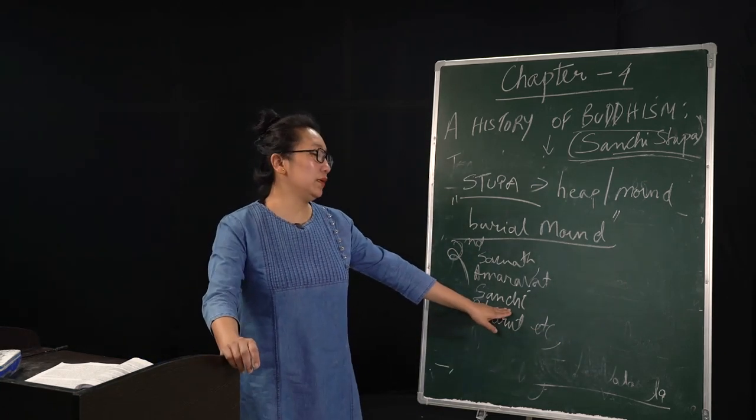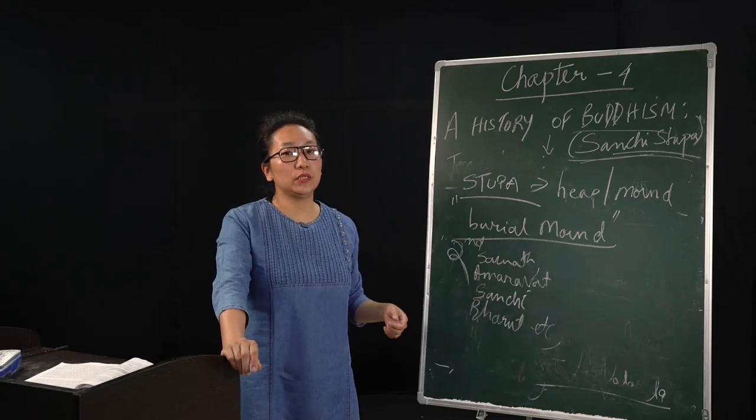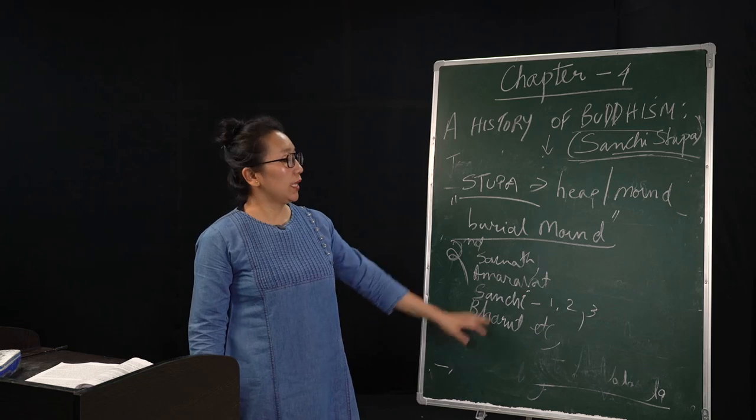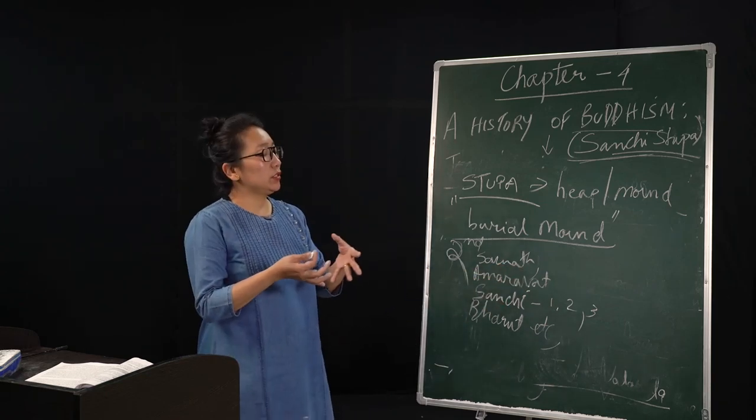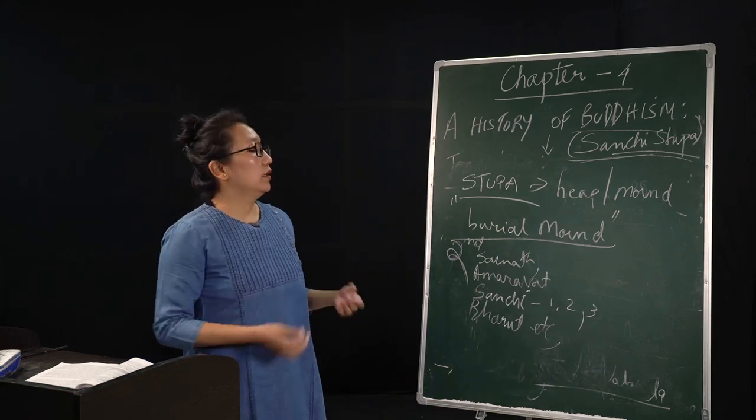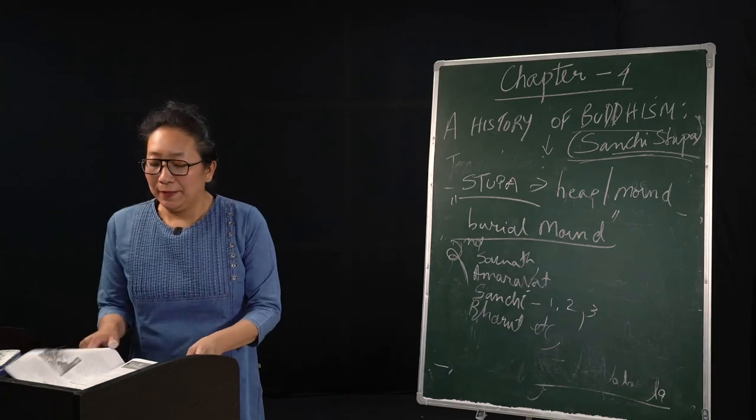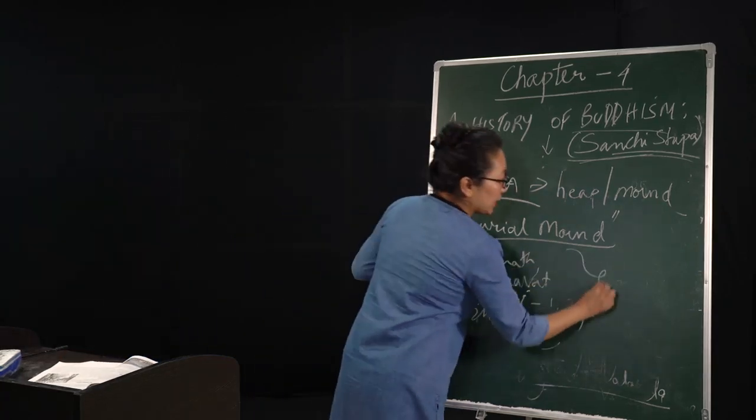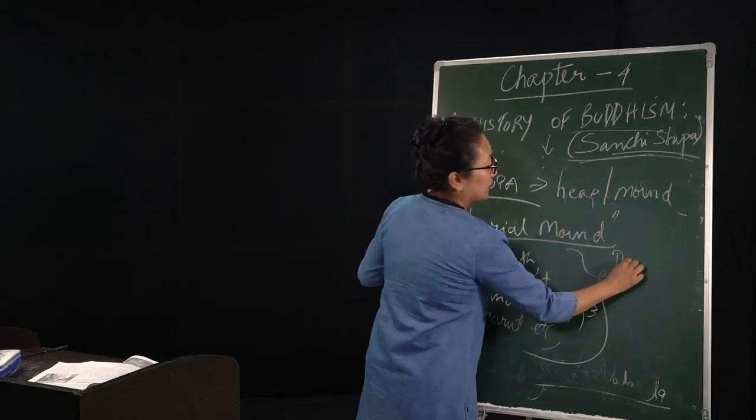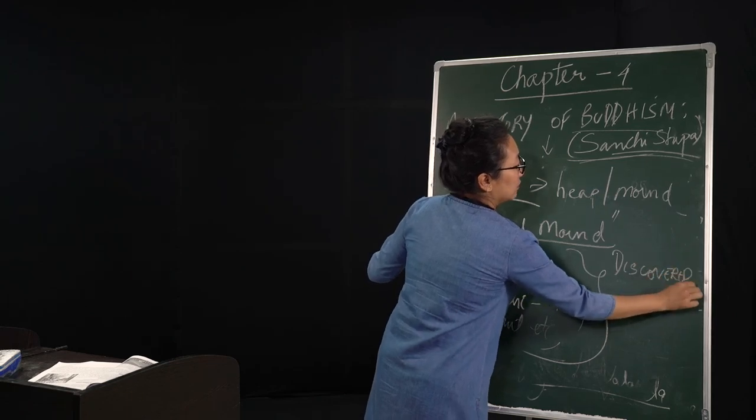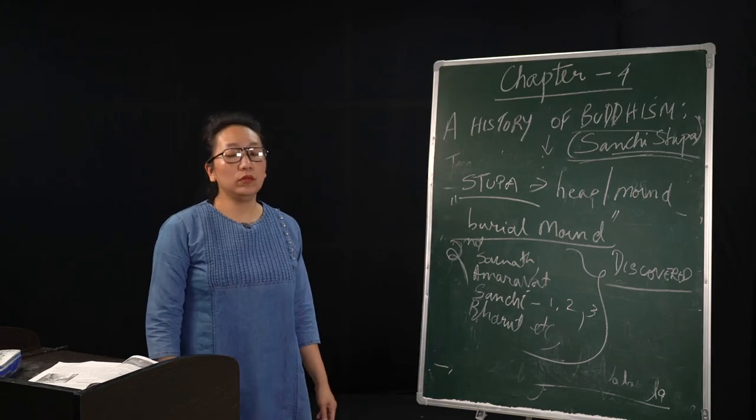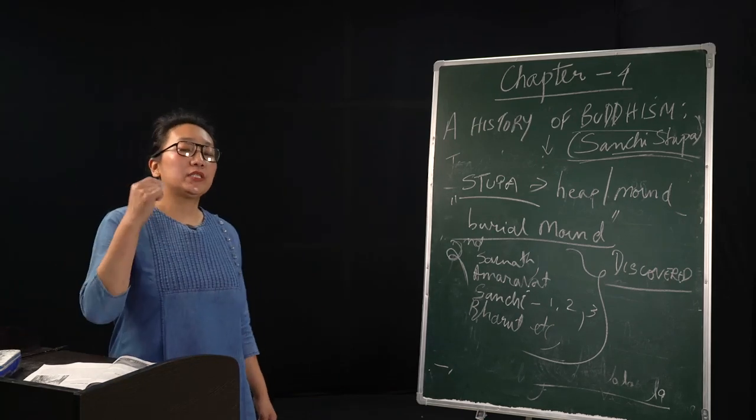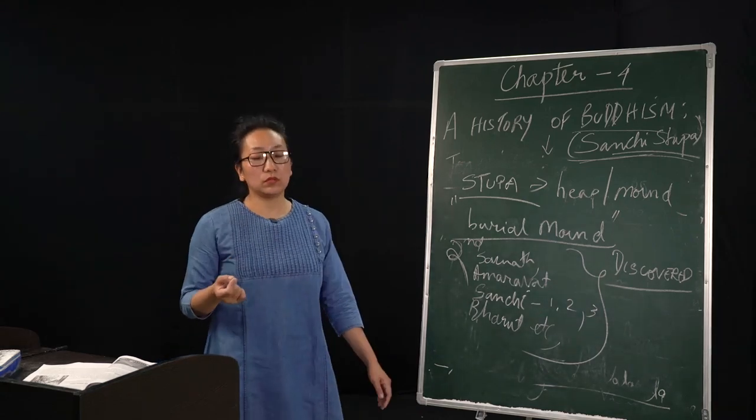It is said that in Sanchi Stupa, the stupa was originally commissioned by Ashoka. And there are three stupas here. The first stupa was constructed by Ashoka and it is said that in this first stupa, the legend says that the cremation ashes of Buddha was laid there where the stupa was built. These are all historical monuments today, and these were discovered. If you turn to page number 80 and 83, you will find the pictures of how a stupa looks that will make it very clear for you.